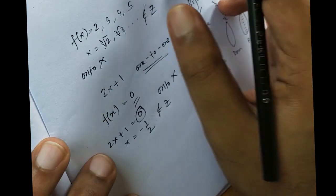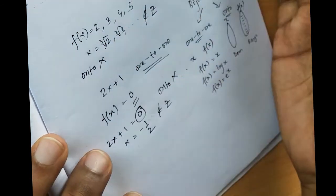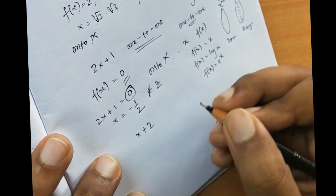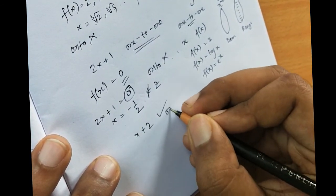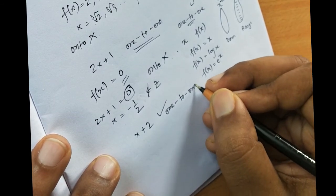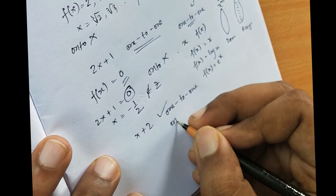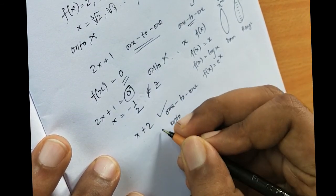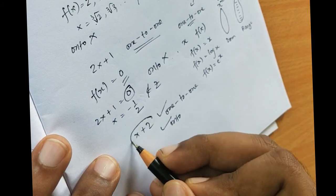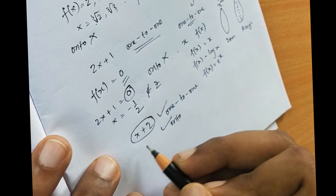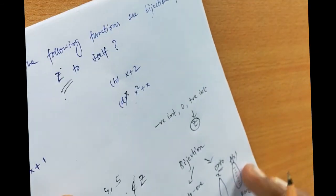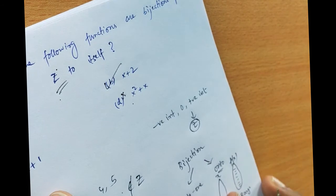That leaves x+2, which is both one-to-one and onto, since every integer is mapped to exactly one integer and no integer in Z is left unmapped. Therefore option B, x+2, is the correct answer.